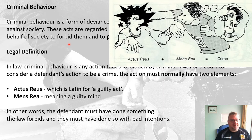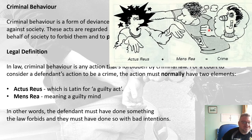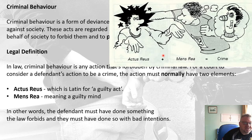So the defendant must have done something that the law forbids, and they must have done it with bad intentions. So for example: I want to hurt this person badly — my mens rea is thinking I'm going to give him a good thumping. I smack him in the head, which is actually assault, so it's an actus reus as it's against the law. Therefore I've got both — so therefore it is a crime.